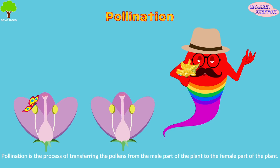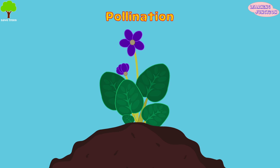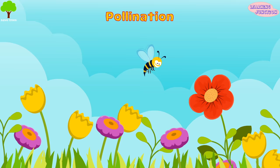Pollination is the process of transferring the pollen from the male part of the plant to the female part of the plant. This process is used to fertilize the plant and make wonderful baby plants or seedlings.